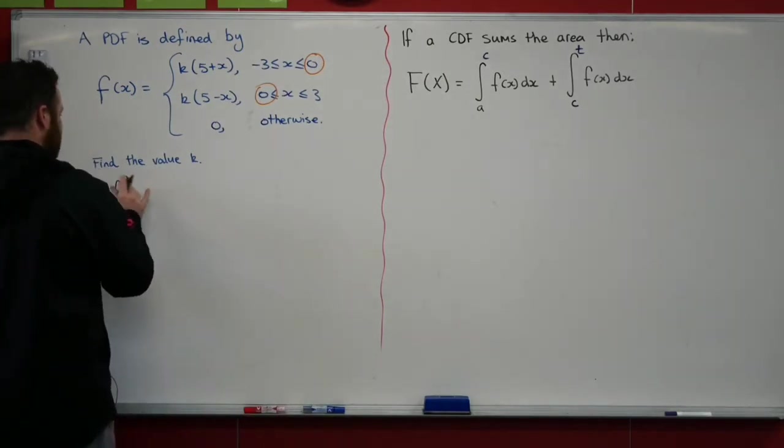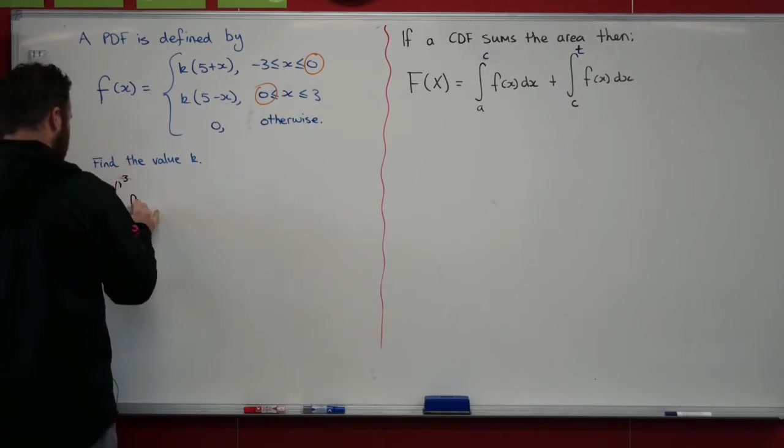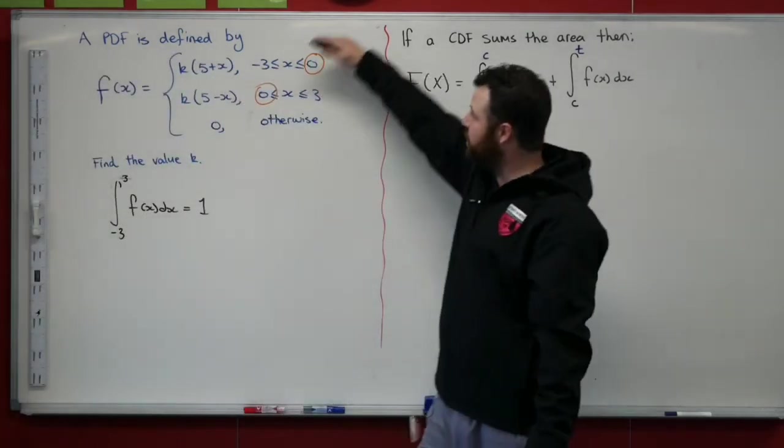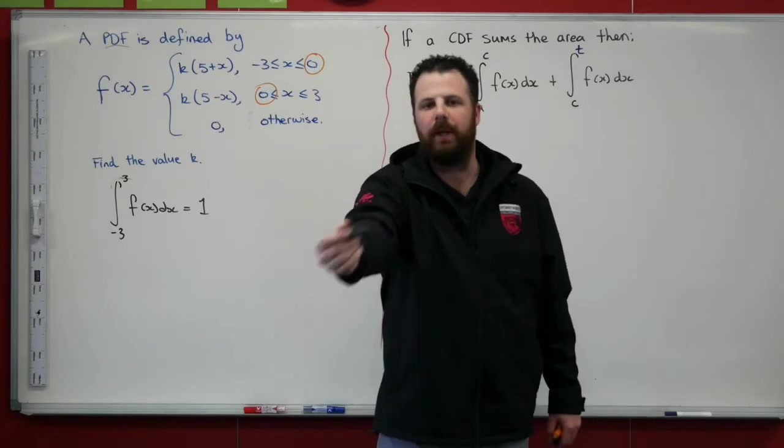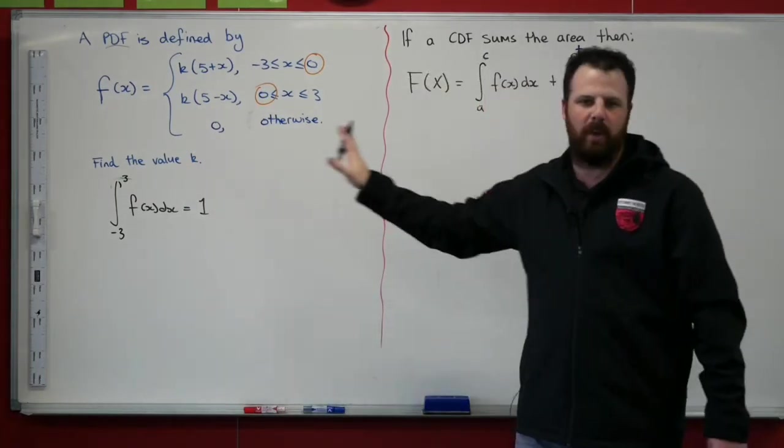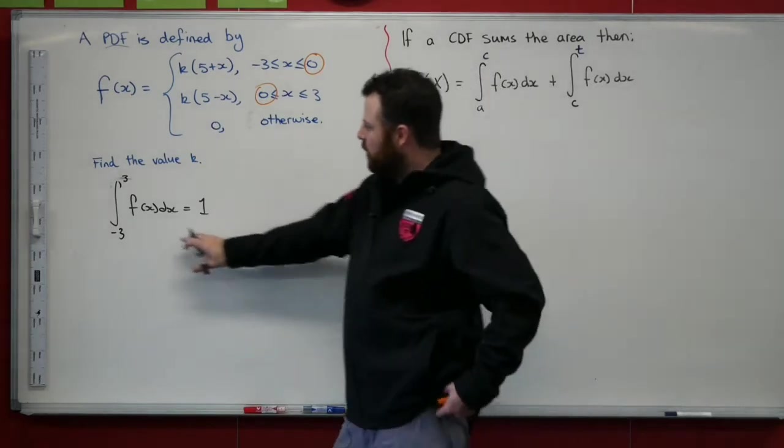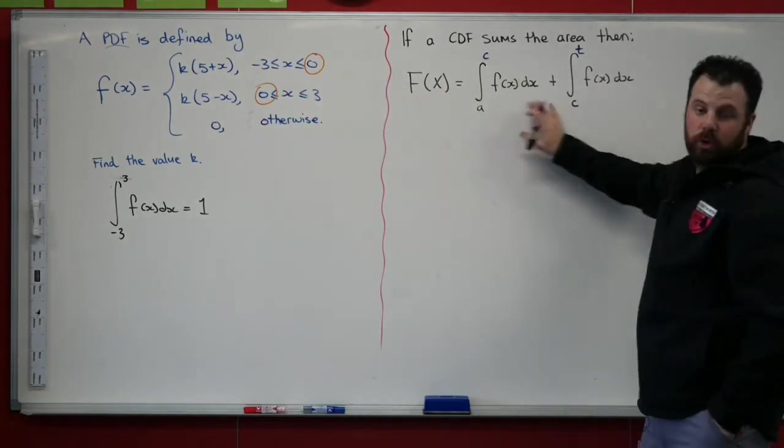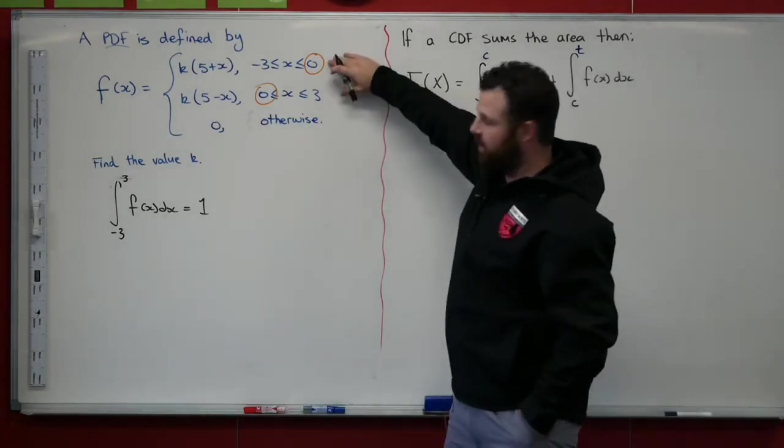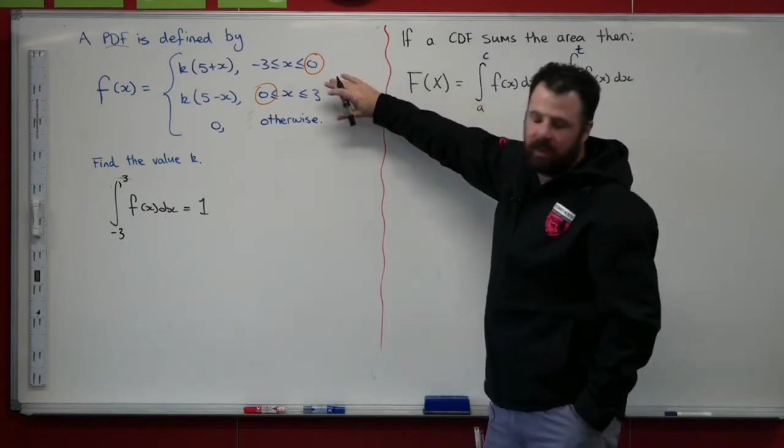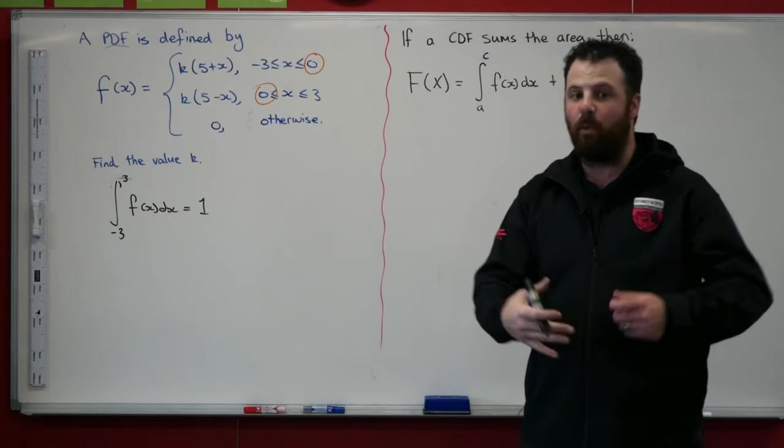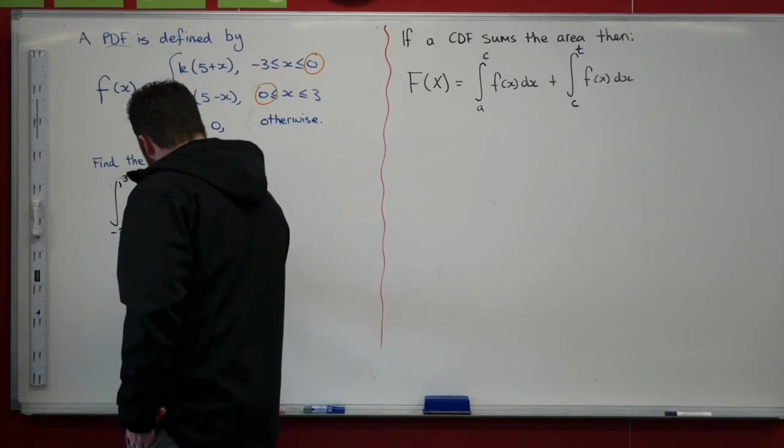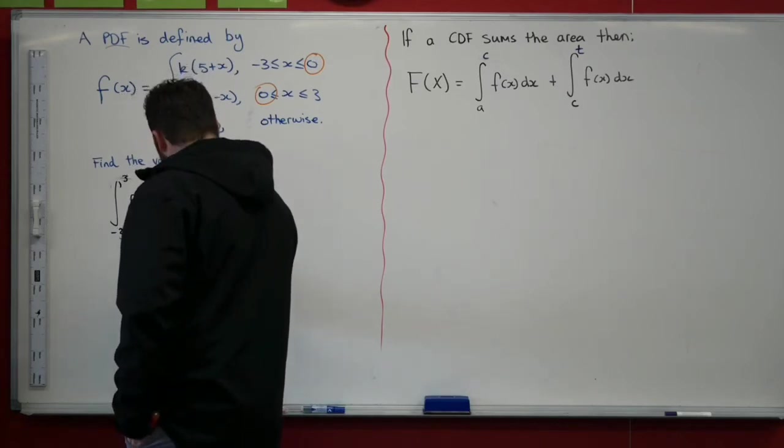So what we know is that the integral between minus 3 and 3 of f(x) with respect to x needs to equal 1, because in the question it's defined as a probability density function. So we need to go through and we need to evaluate and solve that. If we want to integrate this function between minus 3 and 3, what we're doing is we've got two areas here.